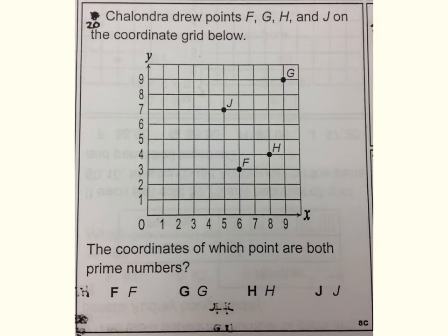Number twenty. Shalandra drew points F, G, H, and J on the coordinate grid. The coordinates of which point are both prime numbers?